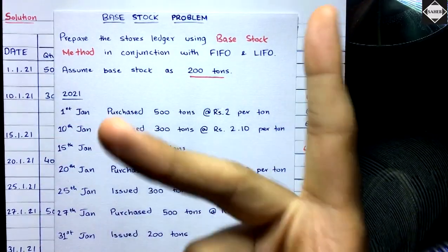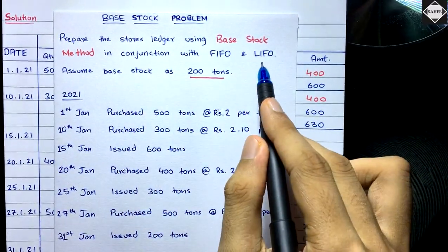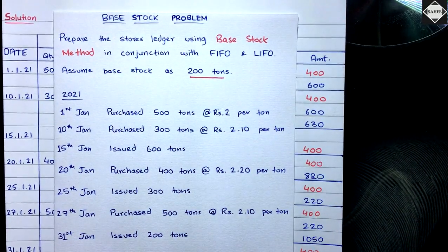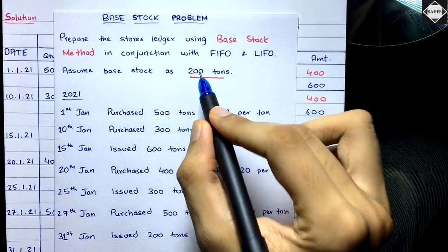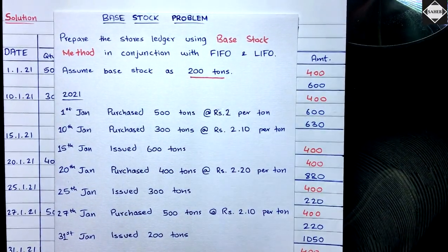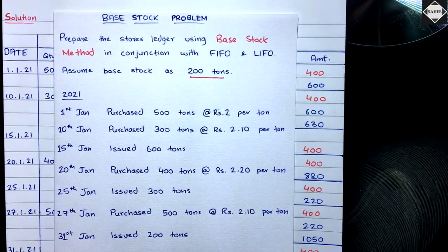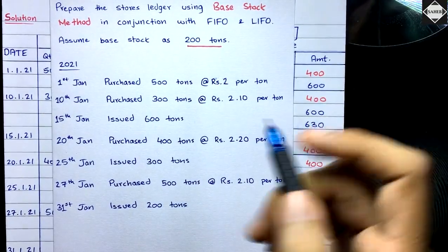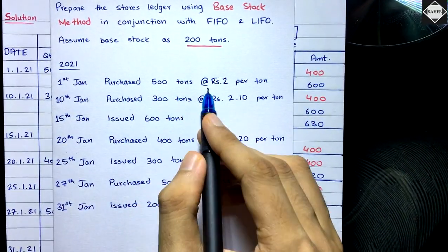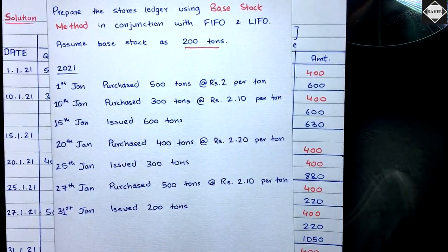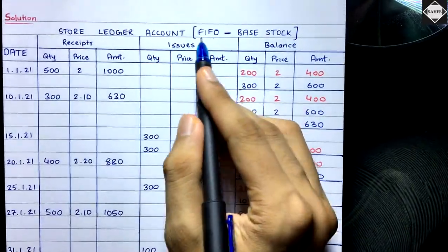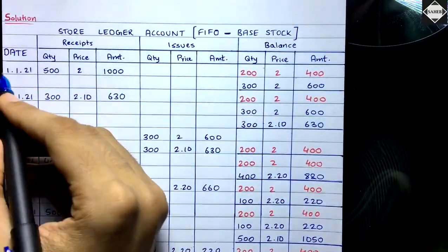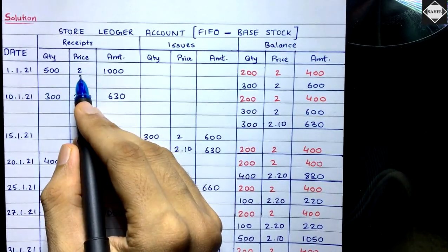The question says assume base stock as 200 tons, meaning at all times there should be a minimum of 200 tons in the warehouse. We have information regarding purchases and issues. On 1st January, we purchased 500 tons at ₹2 per ton, so we put that into the stores ledger under FIFO: 1 January 2021, 500 quantity at price ₹2, giving ₹1,000.